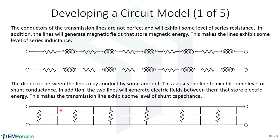Finally, the distributed capacitance. It is distributed, so it has units of farads per meter. To write it as a lumped element, we multiply by the length delta Z, giving us a lumped capacitor. We have distributed capacitance because the two wires in parallel, with voltages across them, establish an electric field pointing from wire to wire that stores electric energy — that is capacitance.